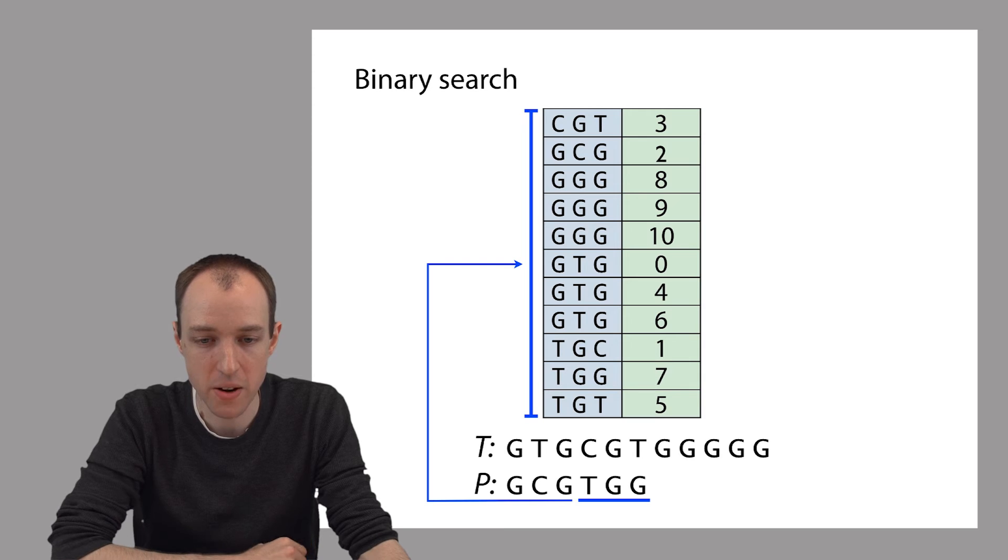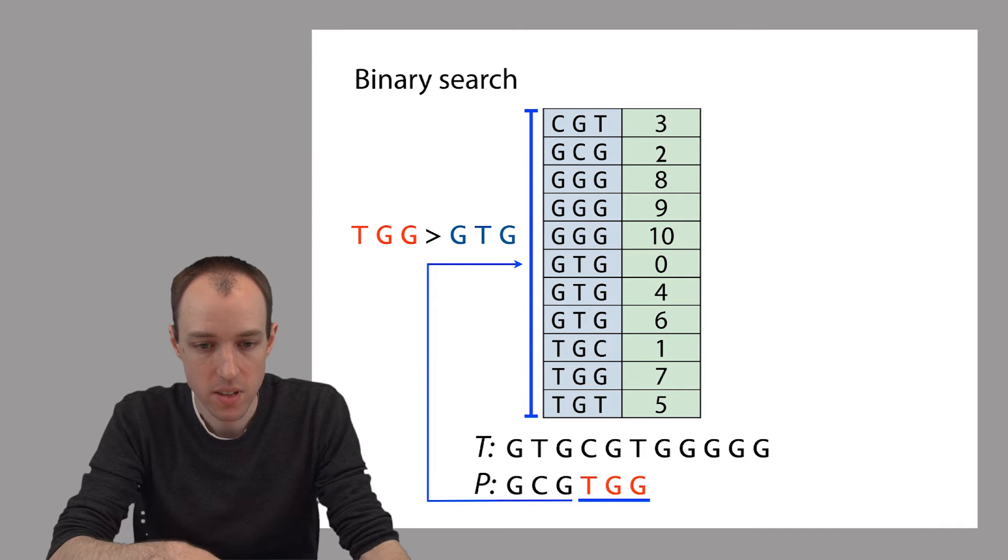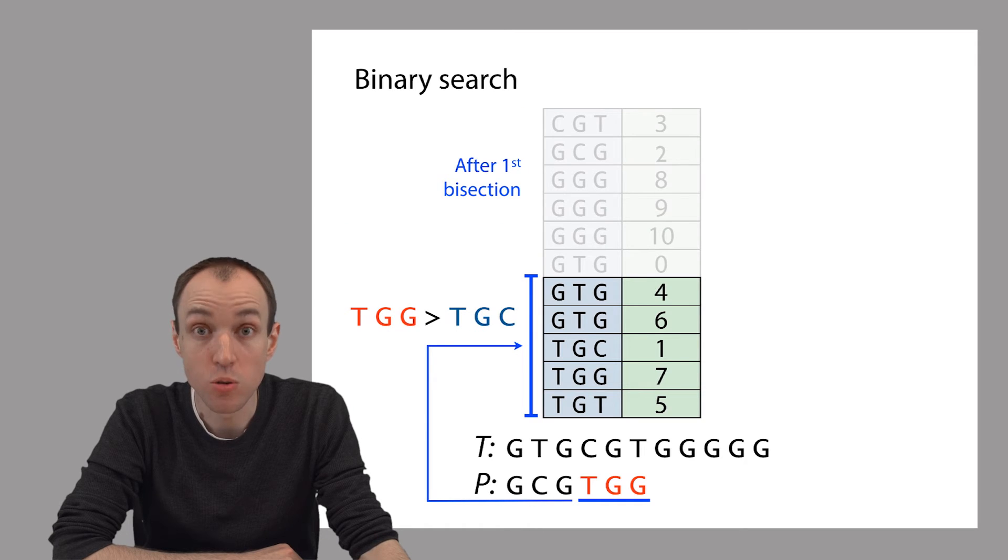Let's see an example using our index. Let's say this is our pattern P from which we extract the 3-mer TGG. First we take TGG and compare it to the 3-mer that's in the middle of the index, the one that's alphabetically in the middle, which in this case is GTG. Our query is alphabetically greater than that. TGG comes after GTG. So we can ignore in the index every entry up to and including GTG. We've effectively divided the problem in half. Each time we divide the problem in half this way, we call this a bisection.